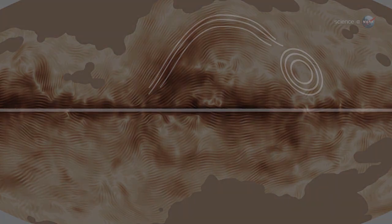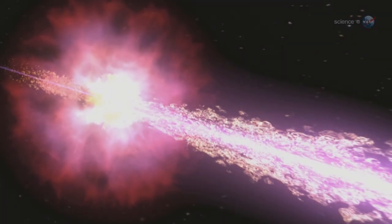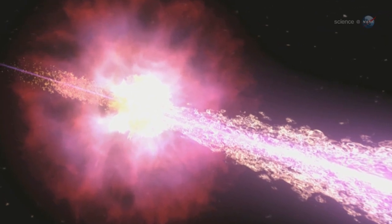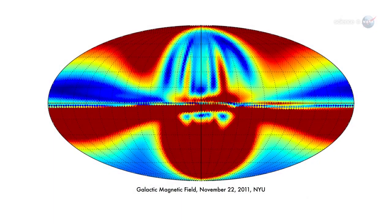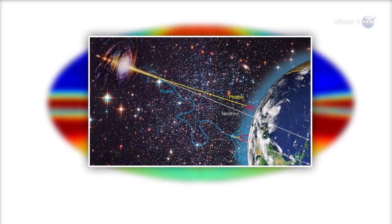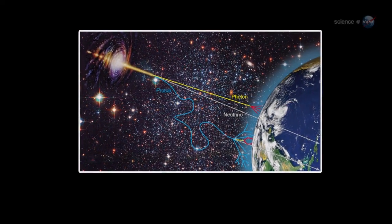Mapping these details is important. For one thing, notes Ferriere, it helps us understand very high-energy cosmic rays. These mysterious particles are deflected by the Milky Way's magnetic field. Tracing them back to their point of origin requires knowing that field's morphology.